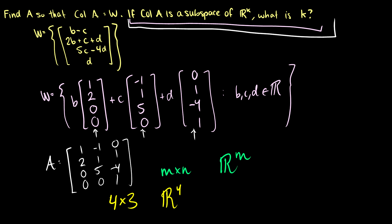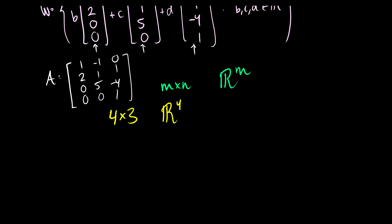So on a related note here, what about null space of A? Well, null space of A is, of course, going to be a subspace of R to the n, and this is a 4 by 3. So the null space of A is going to be a subspace of R^3.